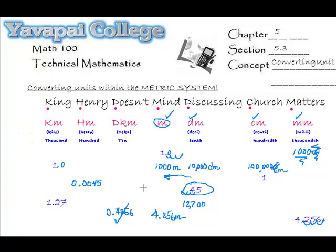The metric system is really easy to manipulate once you understand and remember King Henry doesn't mind discussing church matters. Remember that the bigger units are on the left. This kilometer is the largest unit and millimeter is very, very tiny. Millimeter is the smaller unit. As long as you write it that way, moving within the metric system should be pretty straightforward.